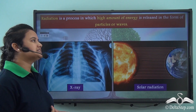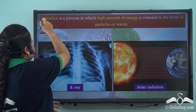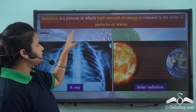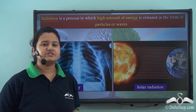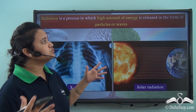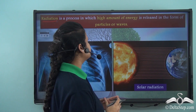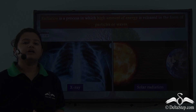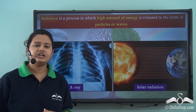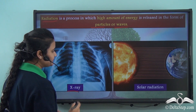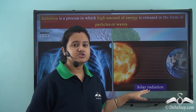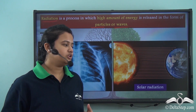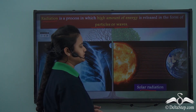An x-ray is a type of radiation. Now what is meant by radiation? Radiation is a process in which a high amount of energy is released in the form of particles or waves. Some examples of radiation are x-rays, and in fact the solar radiation that comes from the sun is also a form of radiation.